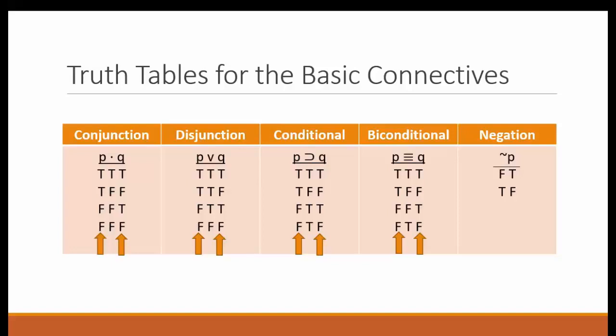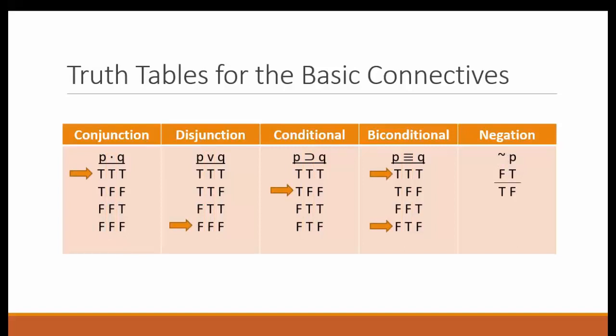Those columns express all possible combinations of truth values for any two statements. This is what is called a base table. The circled values are the truth values that result when the connective is applied. Each connective results in a unique set of truth values. Notice that for conjunctions, disjunctions, and conditionals, there is one unique row of truth values.